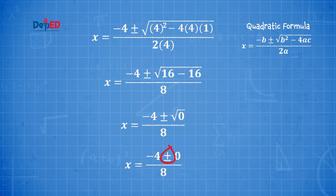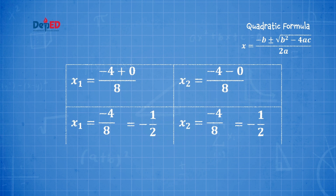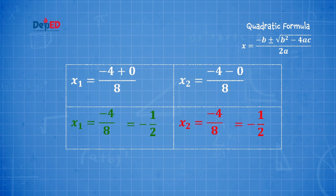At this point, we break down this equation into 2 to separate the plus sign from the minus sign. Hence, x₁ = (−4 + 0) / 8 and x₂ = (−4 − 0) / 8. Then we solve for x. We express the answer as a fraction in simplest form if the root is rational but not an integer. x₁ = −4/8 = −1/2, and x₂ is also −4/8 = −1/2. So the two roots of the equation are equal.